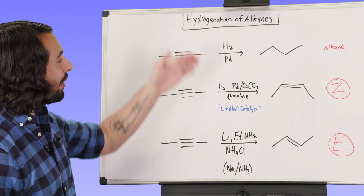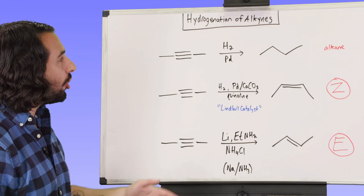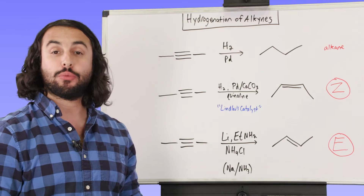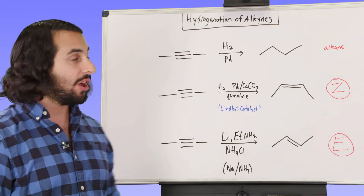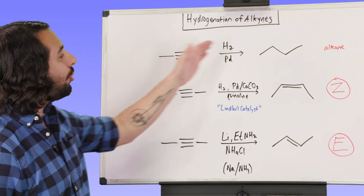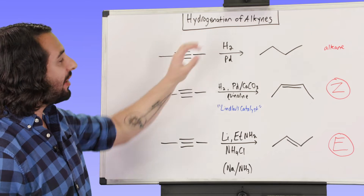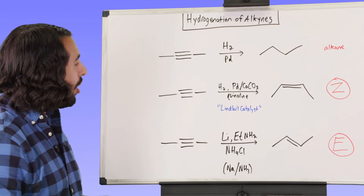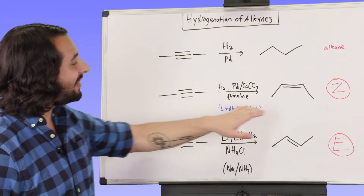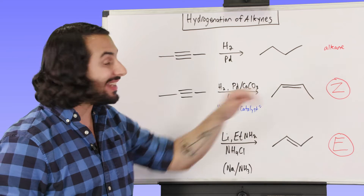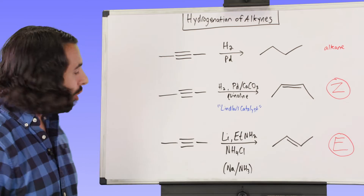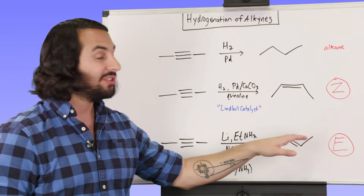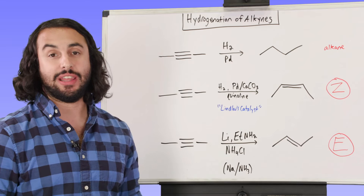So these are three things to remember in terms of hydrogenation of alkynes. We can go all the way to the alkane with simple hydrogenation over palladium metal, or we can use Lindlar's catalyst and go to the Z alkene, or we can use lithium/ethylamine or sodium/ammonia and go to the E alkene.